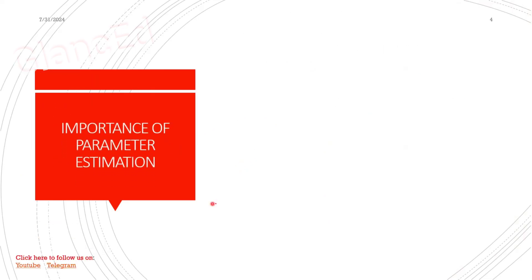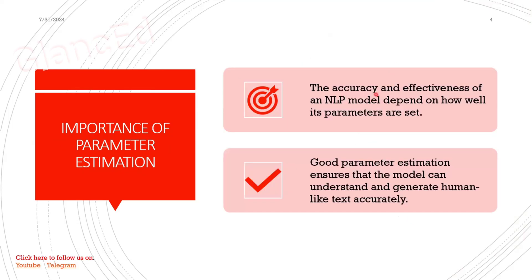What is the importance of parameter estimation? First, it will generate accurate results. If you set the parameter values to the best values, the model gives accurate and effective results. Additionally, if you set good parameter values, the model will understand and generate human-like text accurately.